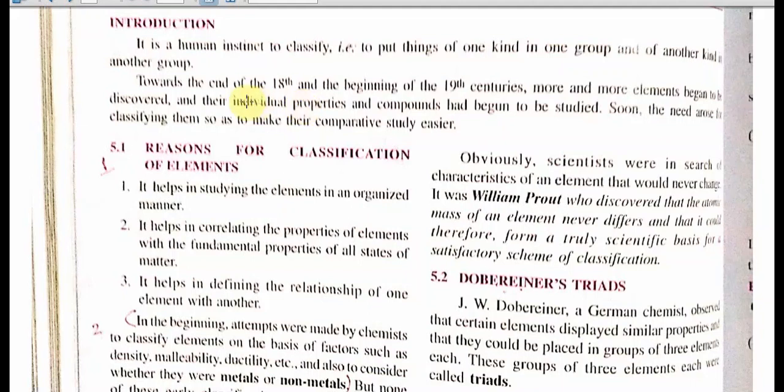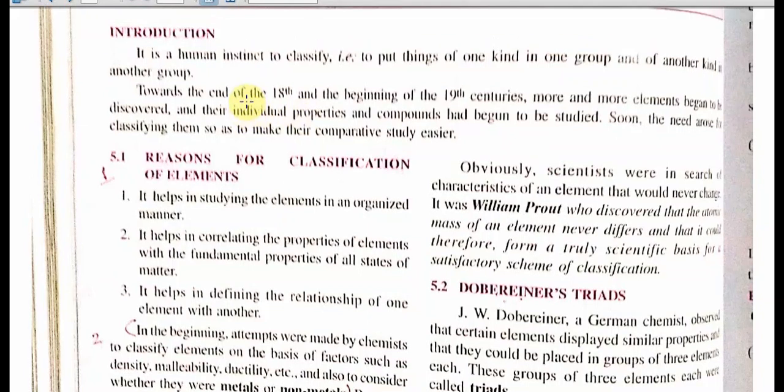Let's start from the introduction. It is a human instinct to classify things together — we want to keep similar things together and different things at different places. Scientists started to discover elements; copper and iron were discovered, and then there were attempts to organize them serially.